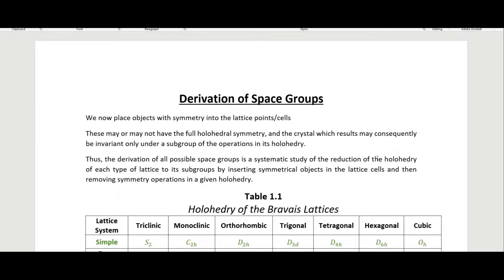In this video we're going to start looking at what happens if we place objects that have point group symmetry into the lattice points or cells of our lattice. In the last video we looked at the actual point symmetry of the lattices themselves, and now we want to look at what happens to that point symmetry when we place objects such as atoms or molecules into the points or cells of our lattice.